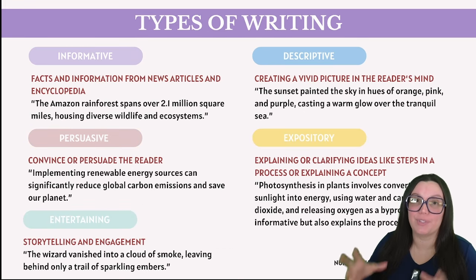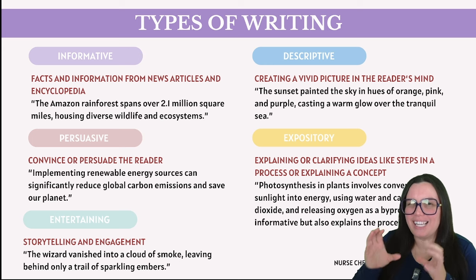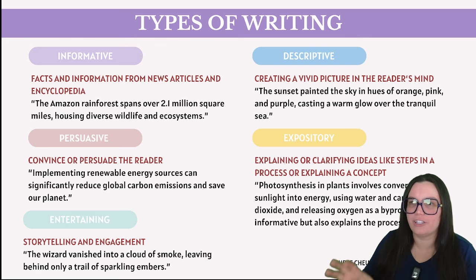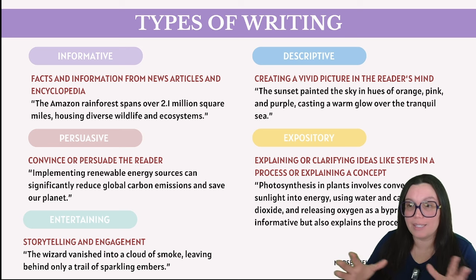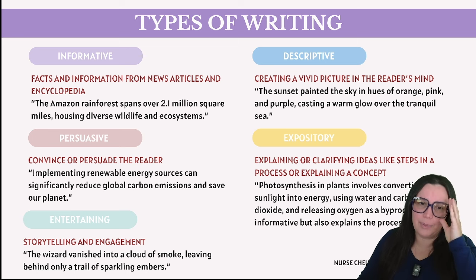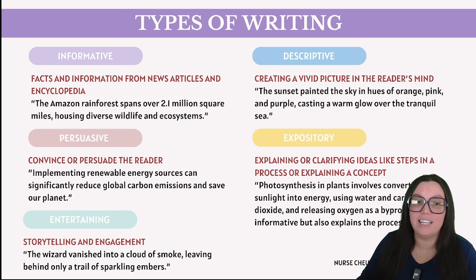For our last section, let's look at types of writing. Informative writing provides information and facts, focusing on delivering data, statistics, and straightforward information to educate the reader. It uses neutral, unbiased language, avoiding persuasive language or personal opinions. You'll see this in news reports, research papers, factual brochures, and encyclopedia entries. Example: 'The Amazon rainforest spans over 2.1 million square miles, housing diverse wildlife and ecosystems.' Numbers and verifiable facts make this informative.